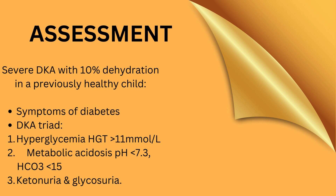Together with these symptoms of diabetes, the patient will also have the following triad for a diagnosis of DKA: hyperglycemia with an HGT of more than 11 mmol/L; metabolic acidosis with a pH of less than 7.3 or a bicarb of less than 15; and ketonuria and glycosuria on dipstick. Looking at this criteria, you can safely say that the patient in our case was truly in DKA.